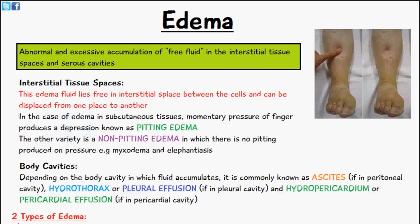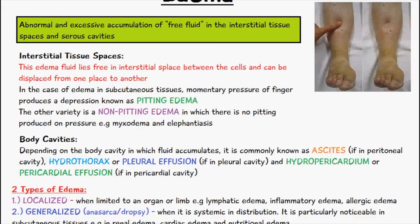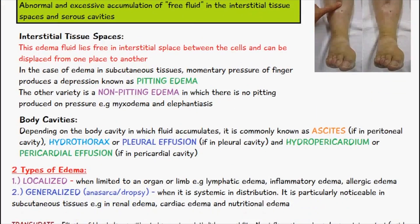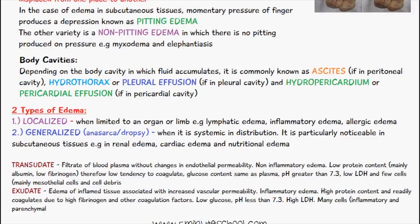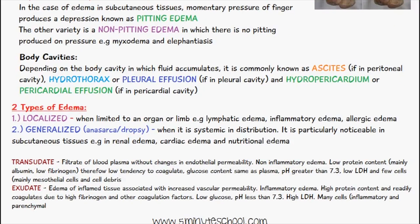Moving on from this, you have two types of edema: whether it's localized or generalized. Localized, obviously, it means it's limited to an organ or a limb. Examples can be lymphatic edema, inflammatory edema, or allergic edema.